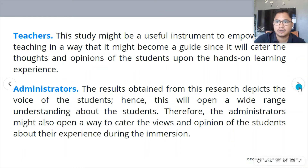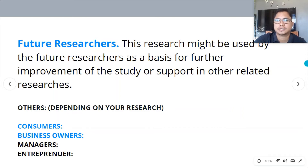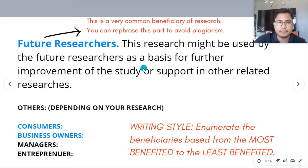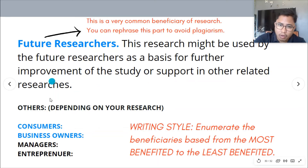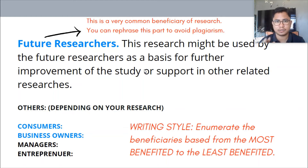There are also administrators. And a very common beneficiary always present is future researchers. For example: 'This research might be used by future researchers as a basis for further improvement of the study or support for other related researches.' All research papers include future researchers as a beneficiary, because a good research paper can be used by the next researchers as a reference, or they can improve it by adding more information to understand the issue.